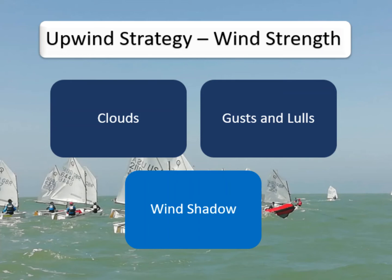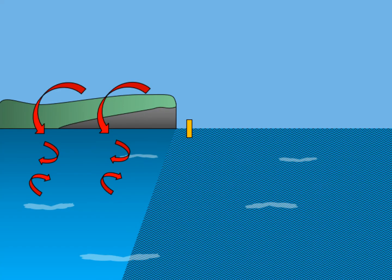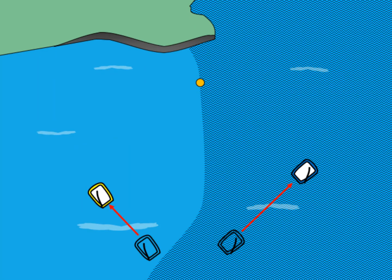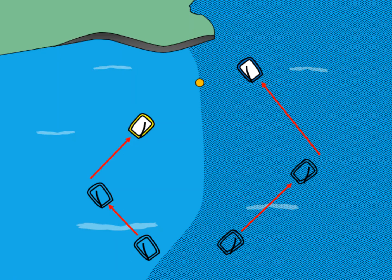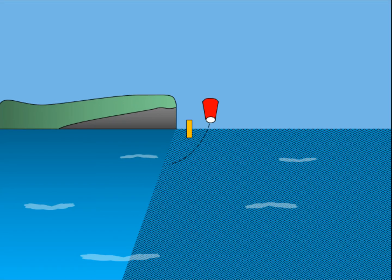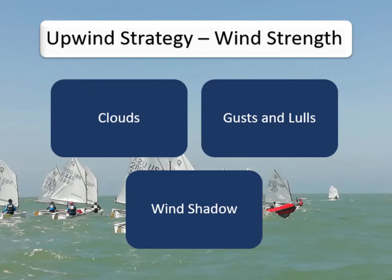However, the shoreline may not be as uniform as that, and there may be a large feature creating a wind shadow on one side of the course. Here, a large headland is directly upwind of the windward mark, disturbing the wind on the left hand side of the course. Staying out of this wind shadow and sailing on the right hand side of the course will mean a higher average boat speed and getting to the windward mark faster — again shown by the blue boat. In this situation you may also feel a change in wind direction due to this headland, which we're going to explore in our next video.